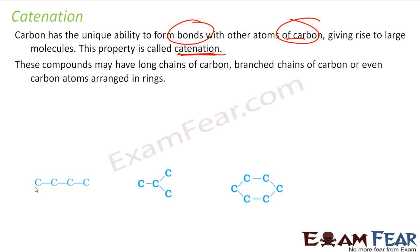These compounds may be a long chain, branched chain — for example, if you see this branch — or can even be a cyclic chain. You see, this one is a long chain, this one is a branched one, and this one is a cyclic one. So catenation is the property of carbon to form chain-kind structures by forming bonds with other carbon atoms, and this can be a long chain, branched chain, or cyclic.